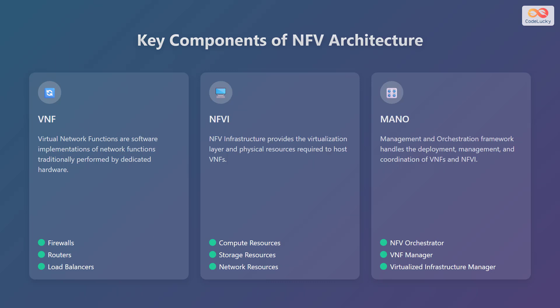The second key component is NFVI, which stands for NFV infrastructure. NFV infrastructure provides the virtualization layer and physical resources required to host VNFs, including compute resources, storage resources, and network resources. The third key component is MANO, which stands for management and orchestration. The MANO framework handles the deployment, management, and coordination of VNFs and NFVI, and includes the NFV orchestrator, VNF manager, and virtualized infrastructure manager.